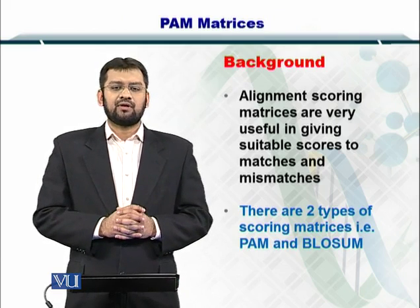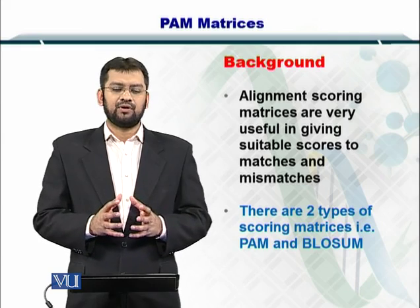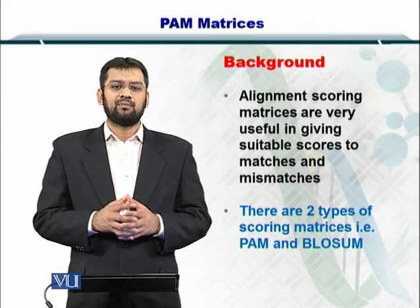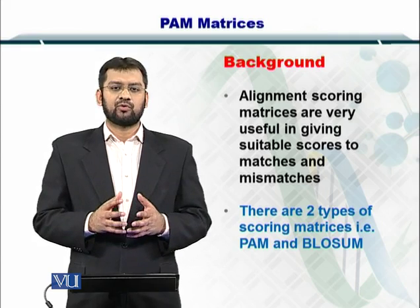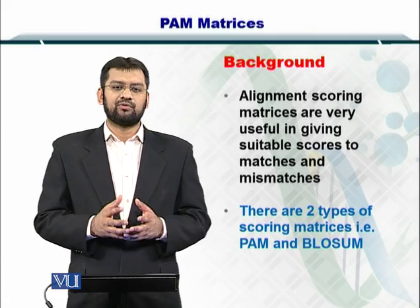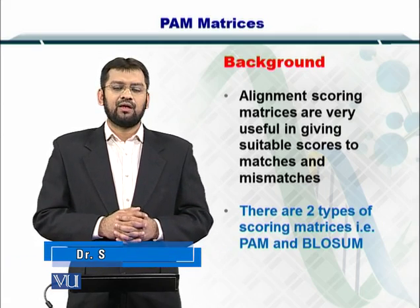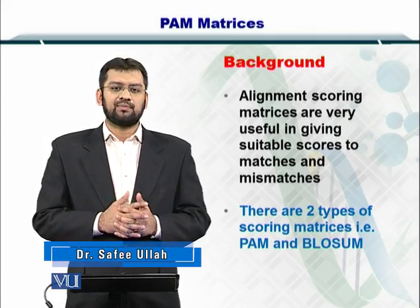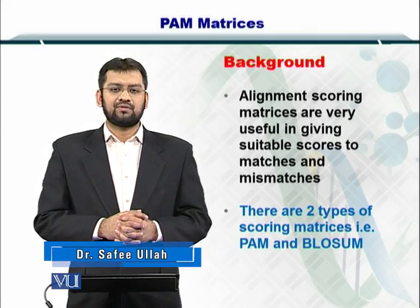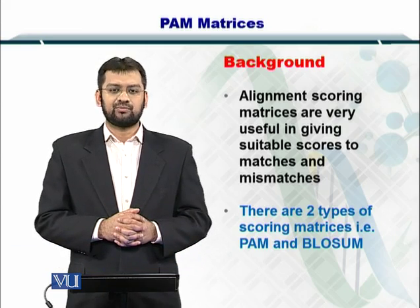Alignments are scored very nicely if we use an empirical scoring matrix — that is, a scoring matrix based on experimentally observed frequencies of amino acids. As mentioned, there are multiple types: for instance, there is the PAM matrix, there is the BLOSUM matrix, and there are several others as well.